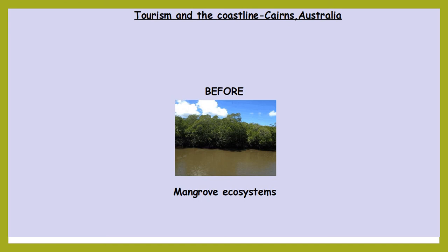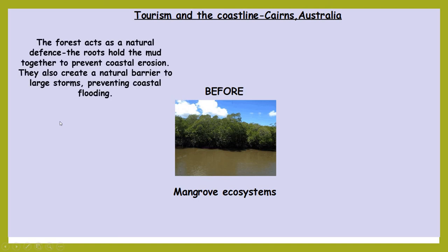Mangroves are really special because they are a tidal ecosystem — they can survive at really low water and really high water. They've got very special root systems, and these root systems are often a nursery for hundreds or thousands of different species of wildlife. The mangroves also do humans a favour: they are a natural flood and coastal erosion defence, breaking up wave energy as the tide comes in and out and breaking up storm energy during intense storms.